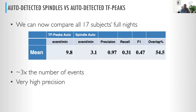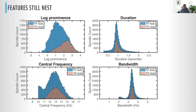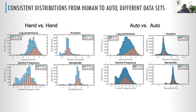Now that we have both an auto spindle detector and an auto TF peak detector, we can run it on all 17 subjects. We again have about three times the number of events as auto spindles, but our precision is 97% — almost every single spindle detected by the auto detector was also picked up as a TF peak. We can look at the distributions of these things, and in everything other than log prominence, we have a really complete nesting of the spindle properties within the time-frequency peak properties. This auto-versus-auto comparison uses thousands more spindles than the hand-versus-hand comparison, but it almost identically confirms the distributional comparison between them.